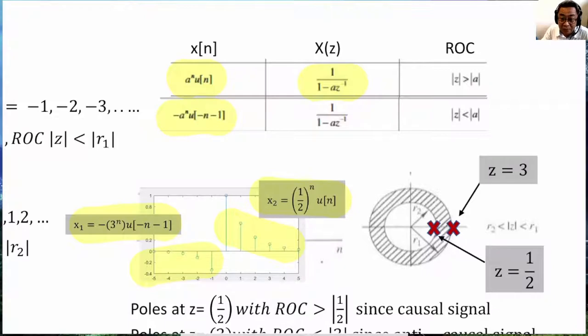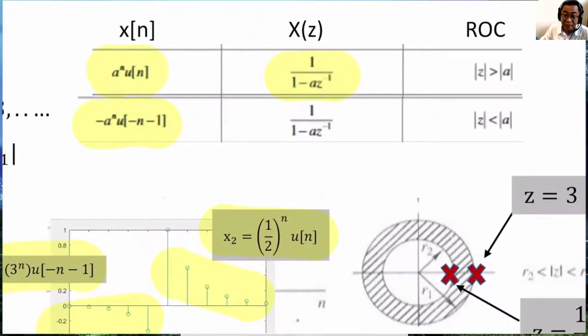Interestingly, for this expression of x[n], but for anti-causal, it is the same expression. The only difference is |z| greater than a for the top one, which is the causal. |z| less than a for the anti-causal.